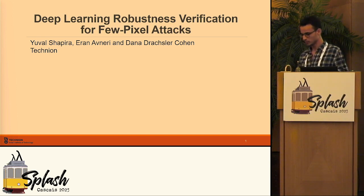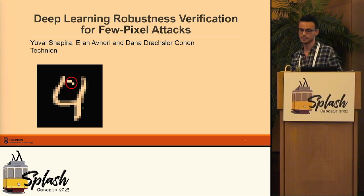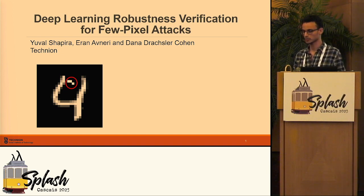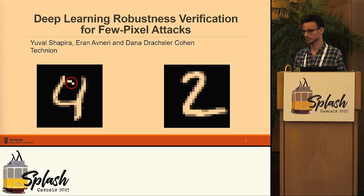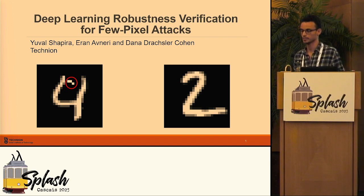We start with an example of a few-pixel attack. Consider this image — it was clearly a four, but by changing only three pixels, we fooled the neural network to classify it as nine. In contrast, consider this image of the digit two. We will show you how we formally proved that by changing at most three pixels, it is impossible to fool the same neural network to change classification from two.